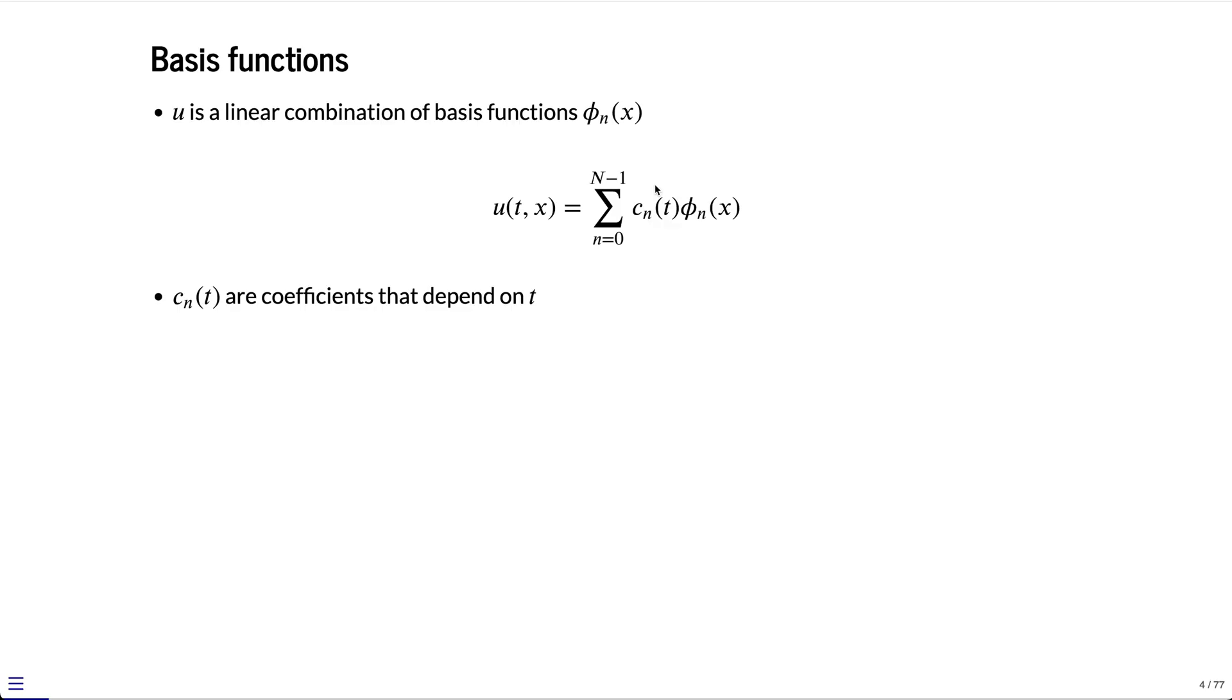In general, for a continuous function u, we would need an infinite number of terms in this summation. When we do the sum here over a finite number of terms, big N, we have a truncation error associated with this. We'll talk a little bit more about that as we go along.